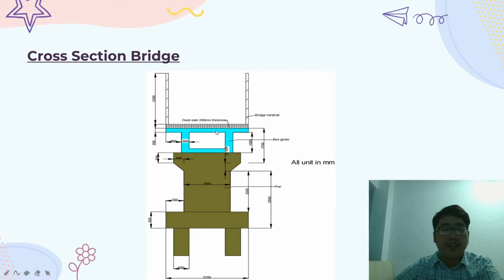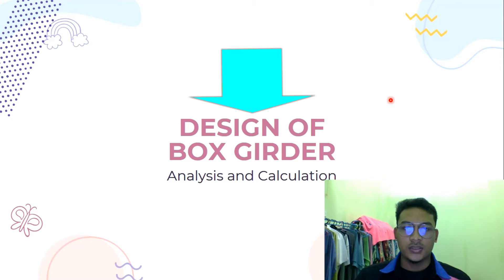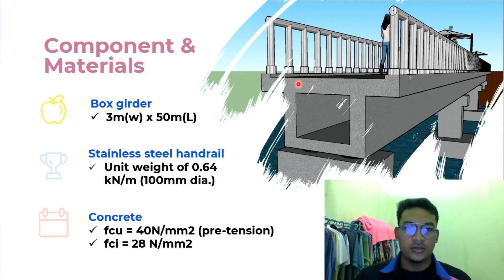And the height of the bridge girder is 2.5 meters, as you can see in this figure. Assalamualaikum and good day. My name is Mama Asrafi. I will continue with the design of the box girder — the analysis and calculation. Firstly, the components and materials we propose. The box girder has dimensions of 3 meters width and 50 meters length.